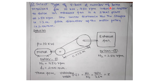Select the type of V-Belt and number of belts required for a 10 kilowatt, 750 rpm induction motor to drive an exhaust fan in a steel plant at 250 rpm. The center distance is specified as 1.2 meters and the pitch diameter of the motor pulley (small d) is given as 200 mm. The velocity ratio is n1/n2 = 750/250 = 3.